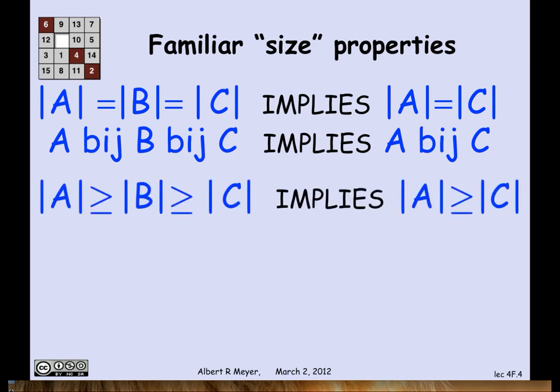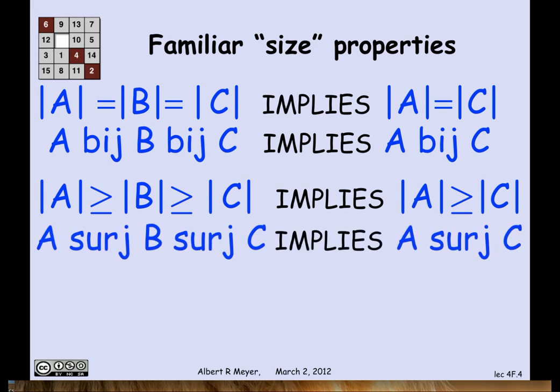Likewise, if the size of A is at least as big as the size of B, and the size of B is at least as big as C, then A is at least as big as C. That would correspond to the statement that if A surj B and B surj C, then A surj C. And that works also for the same reason. The composition of the surjections is guaranteed to be a surjection that goes from A to C.